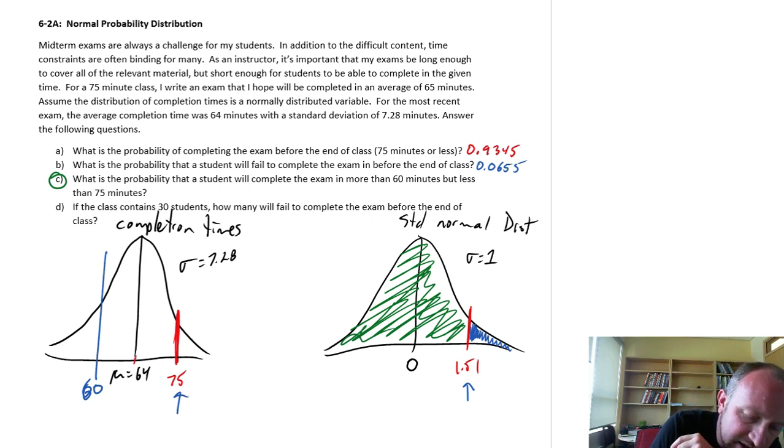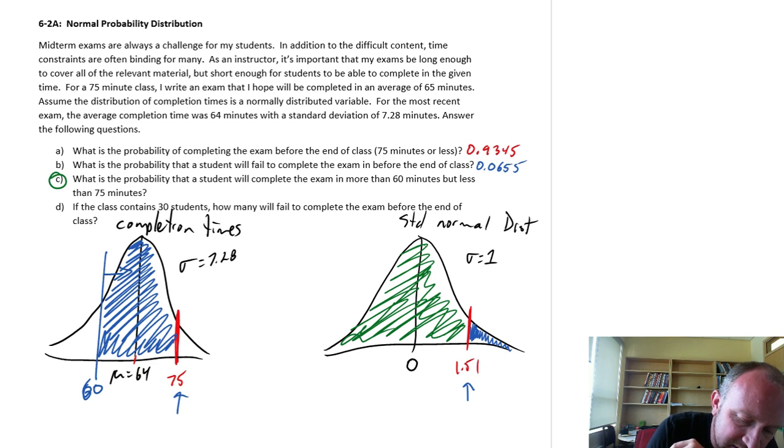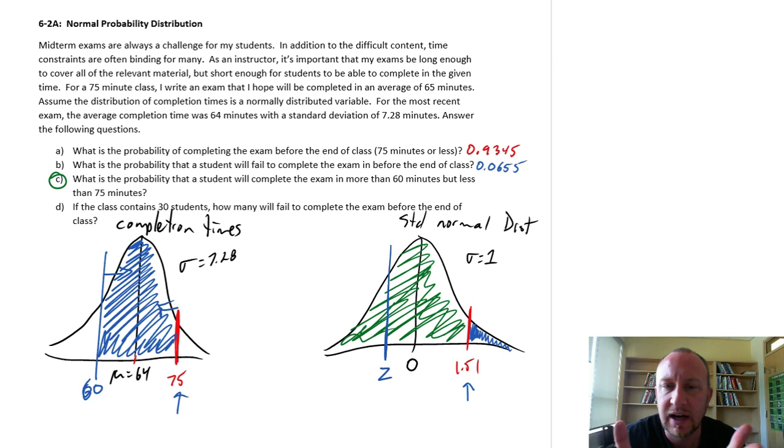And then we need to identify or calculate what is this area under the curve between. So greater than 60 minutes, but less than 75 minutes. So if I come over here, we need to figure out what is this Z value here, and then we'll have to figure out how to calculate that area in between.